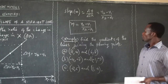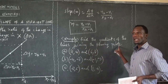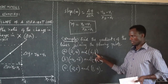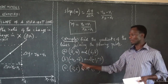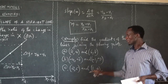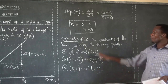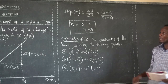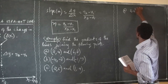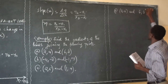Example: Find the gradient of the lines joining the following points. A: (2, 4) and (6, 8). B: (−4, −7) and (−1, −9). C: (2, 5) and (1, 4). For part A, we have the points (2, 4) and (6, 8).